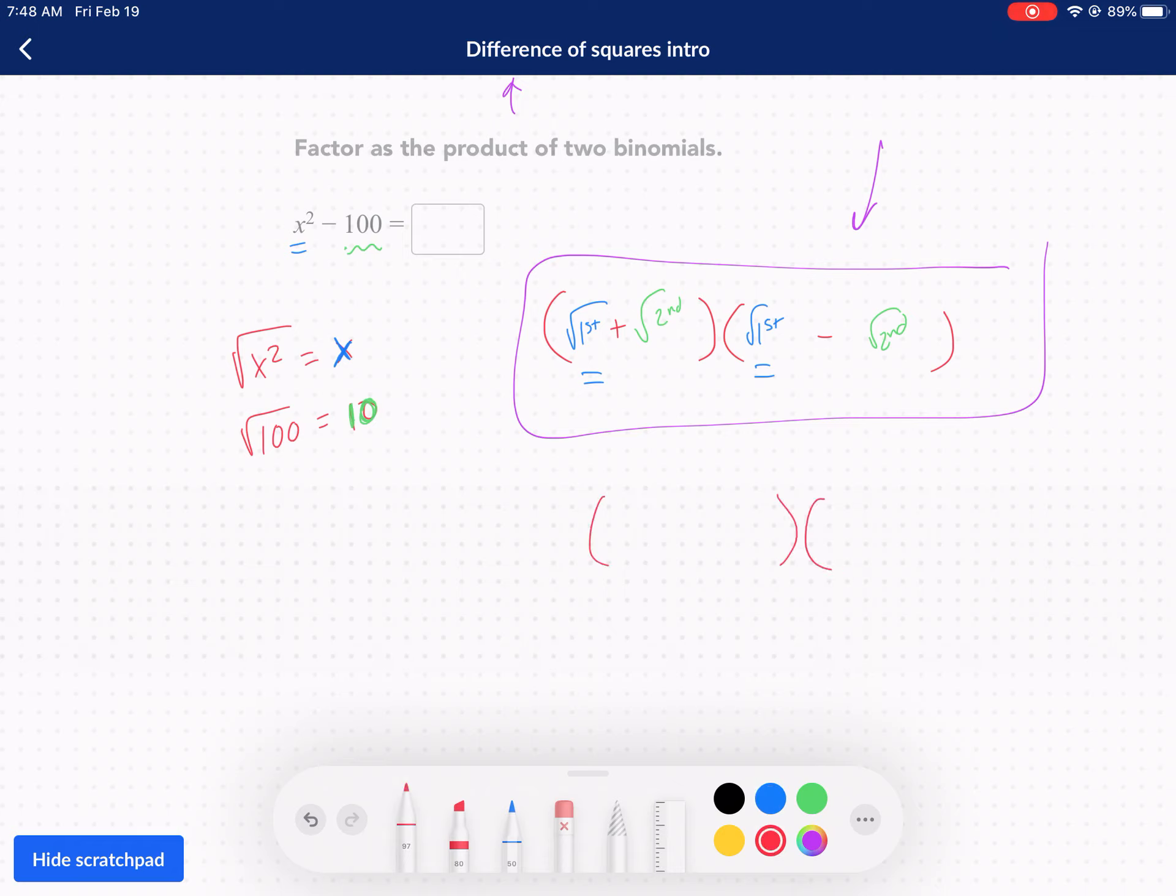We're going to put our parentheses square to the first one we already determined. Boom, X. We're going to plop X down in the first spot for both. Second square root is 10. Boom. We're going to put 10 in both those spots. We're going to make one positive and one negative. And that's all there is to it.